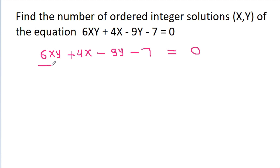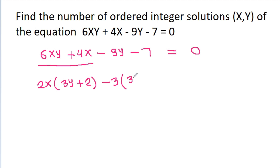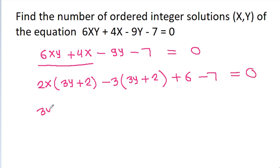From 6xy minus 4x, we can take 2x common and we will get 3y minus 2. And if we take minus 3 common, then we will get 3y. And if we add 2, then we have added minus 3 times 2, that is minus 6. So we need to add 6. And minus 7 equals 0. It is (3y + 2)(2x - 3), and 6 minus 7 will be minus 1, that is equal to 0.